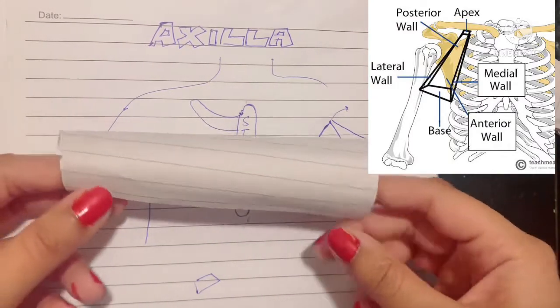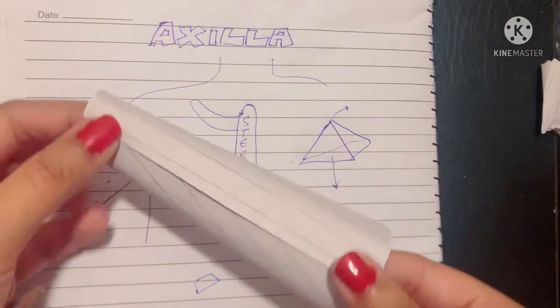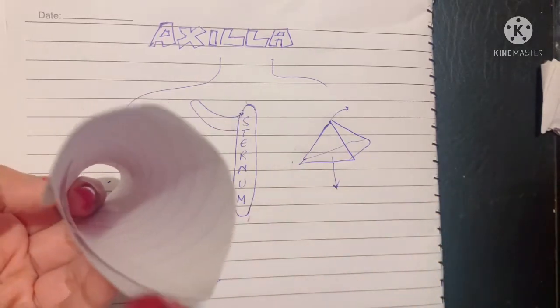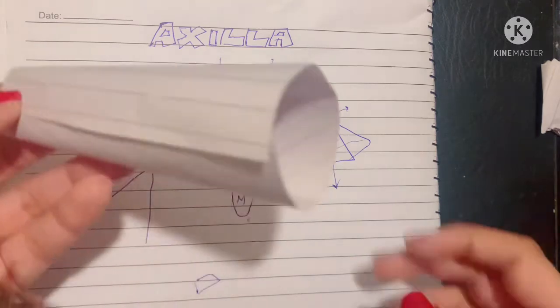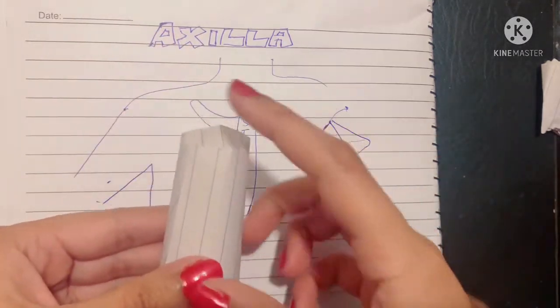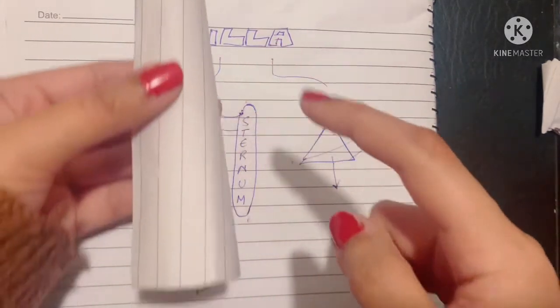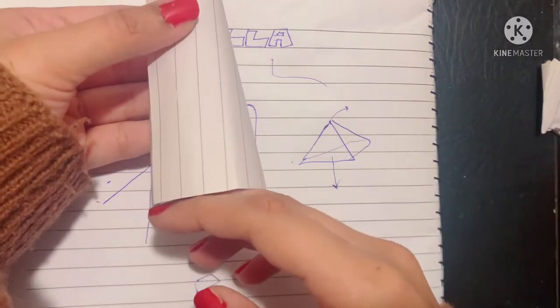So for the ease of understanding the shape of the axilla, I have used a paper and made it into a pyramidal shape. As you can see inside, it is basically a space. The axilla has an apex just like the pyramid. It has a base which is wider than the apex.